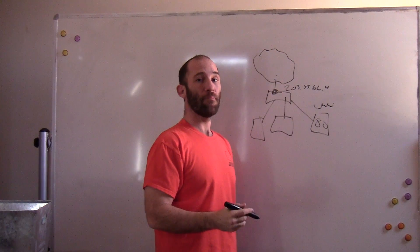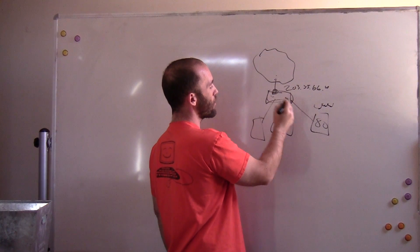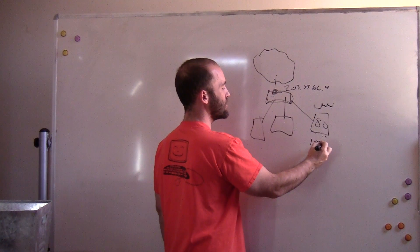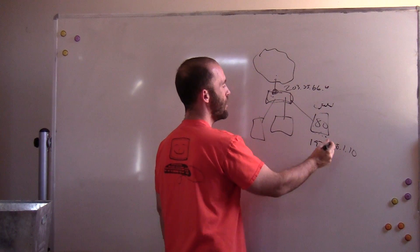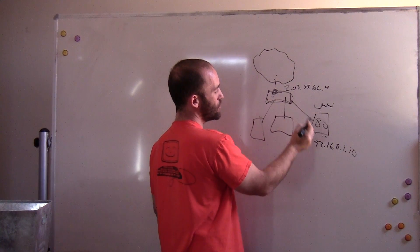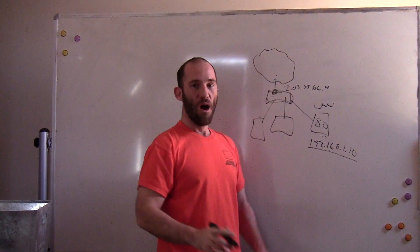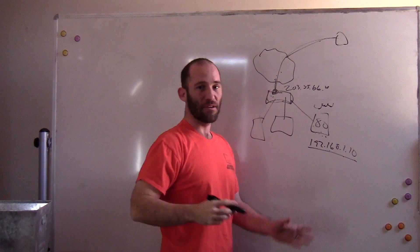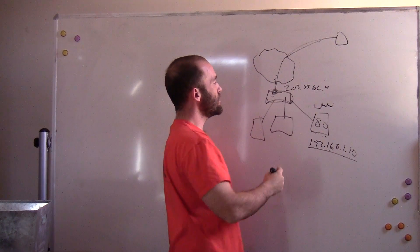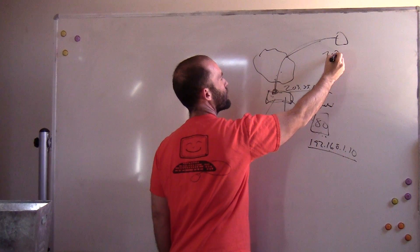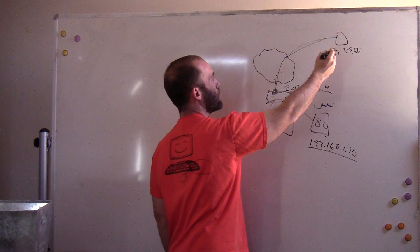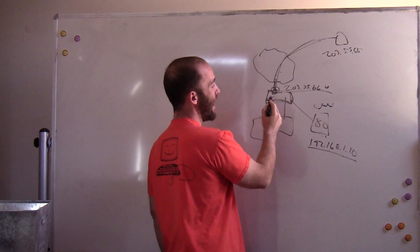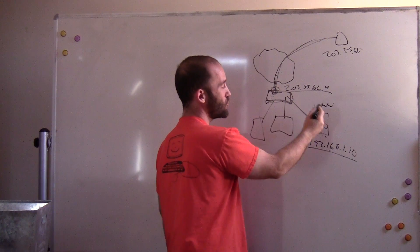What you are going to do to set up port forwarding is, within the router, you are going to forward port 80 to the internal IP address for this web server. So let's say this web server is 192.168.1.10. You are going to forward port 80 to the IP address 192.168.1.10. What that means is if somebody is coming into your network from the internet — sitting out in Paris or Bangladesh or somewhere else — they are going to use the IP address 203.55.66.4, which will direct them to your router, and your router will see they are on port 80 and forward to your web server.